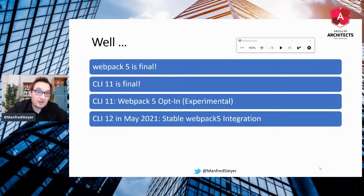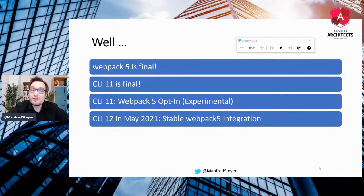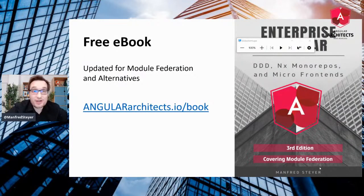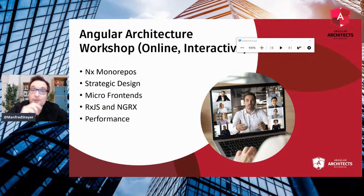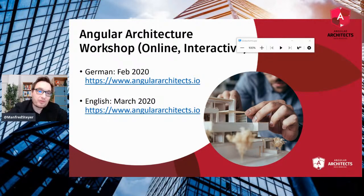However, things will change. With CLI 12, which is due in May, we will get a stable Webpack 5 integration. And then you can start using all of this in production to implement your micro front end solutions or your plugin-based solutions. If you like this topic, check out our free e-book at angulararchitect.io/book. And if you don't like to read that much, we also have a workshop covering this topic in depth, along with other topics like an NX mono repo, strategic design, state management, and performance. We run it next month in German and in March in English — fully online and interactive.